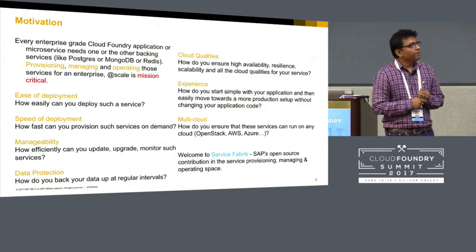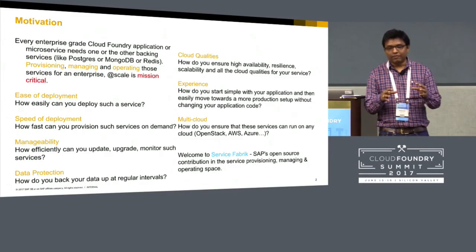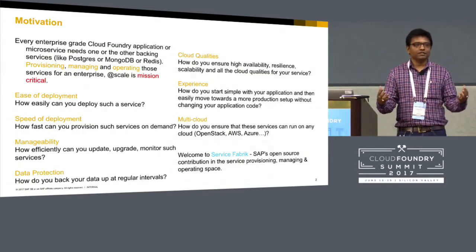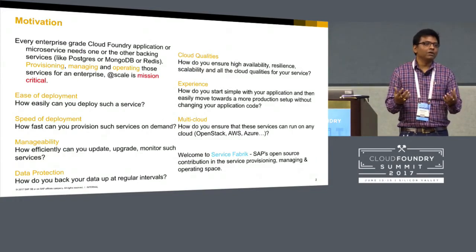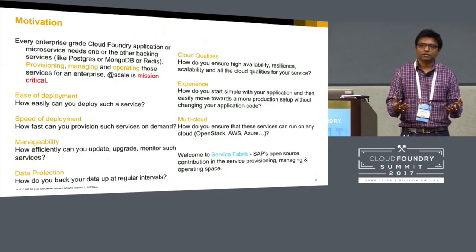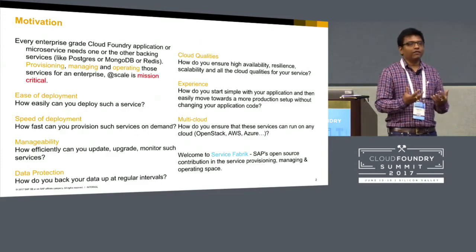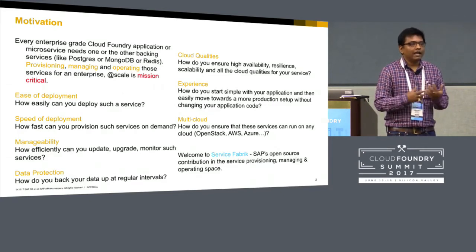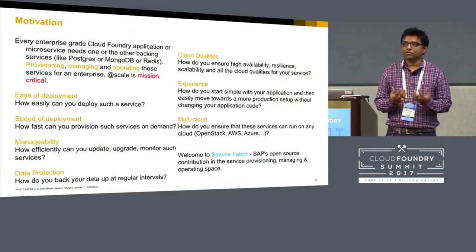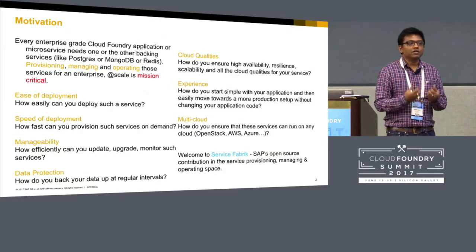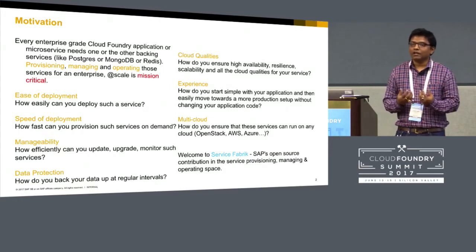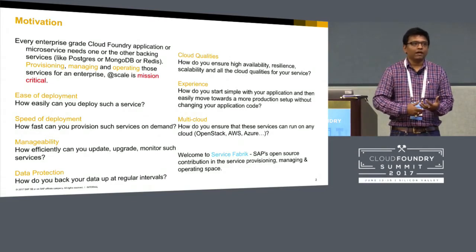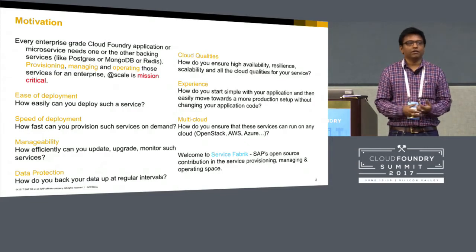Quickly you run into these problems and start thinking that maybe there is some tool that could help do this in an automated fashion. Service Fabric is not alone — it's about provisioning, managing, and operating services. But without the services themselves, Service Fabric is nothing. You need high-quality services like Postgres and MongoDB with service qualities like resilience, failover, and scale built in. Service Fabric understands any BOSH release — give it a BOSH release and it will deploy for you, giving you a full-fledged service running for your organization.